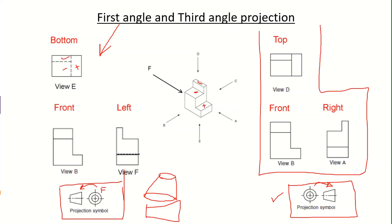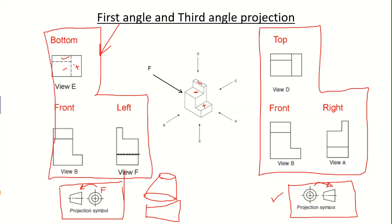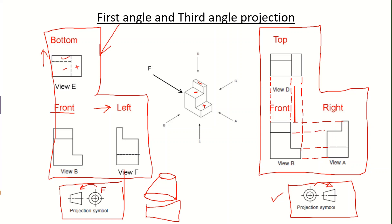To summarize: the third angle projection, typically used in the United States, uses the front view, right view, and top view represented in an L-shape form. In European countries, the first angle projection is used, also indicated in the L-shape form, but it utilizes the front view, left view, and bottom view. It is very important to have the views aligned to each other, meaning the vertical and horizontal lines drawn from the edges should exactly match the other two views.